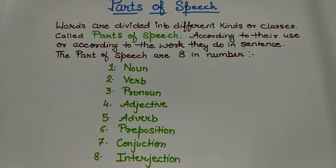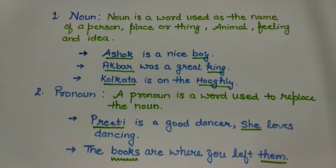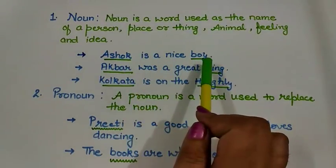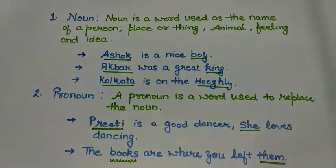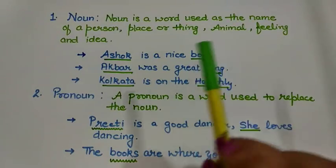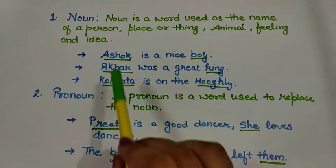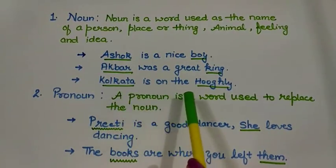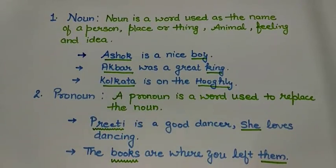The first and foremost is noun. Noun is a word used as the name of a person, place, thing, animal, any feeling or idea. We can say that nouns are the words we use to give names. For example, 'Ashok is a nice boy' — Ashok is a name and hence a noun, and 'boy' is a common noun. 'Akbar was a great king.' The underlined words are nouns. Nouns have a few types and kinds that we will discuss in a detailed session.